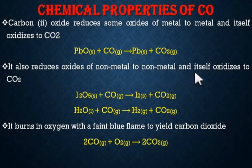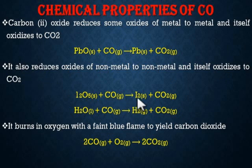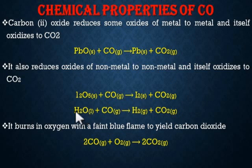Carbon monoxide also reduces oxides of non-metals to non-metal, and itself is oxidized to carbon dioxide. This is iron oxide (Fe₂O₃) combining with carbon monoxide to give iron and carbon dioxide. The oxygen is removed from the iron oxide giving ordinary iron, and the CO takes the oxygen to become CO₂. Carbon monoxide also reacts with water to give hydrogen gas and carbon dioxide.